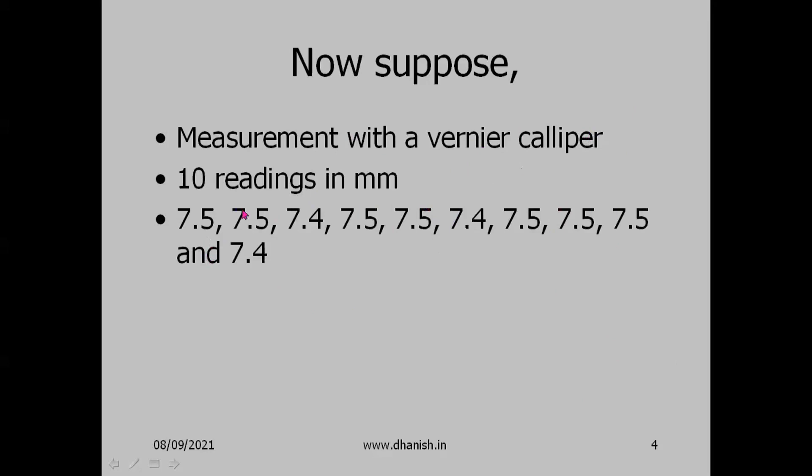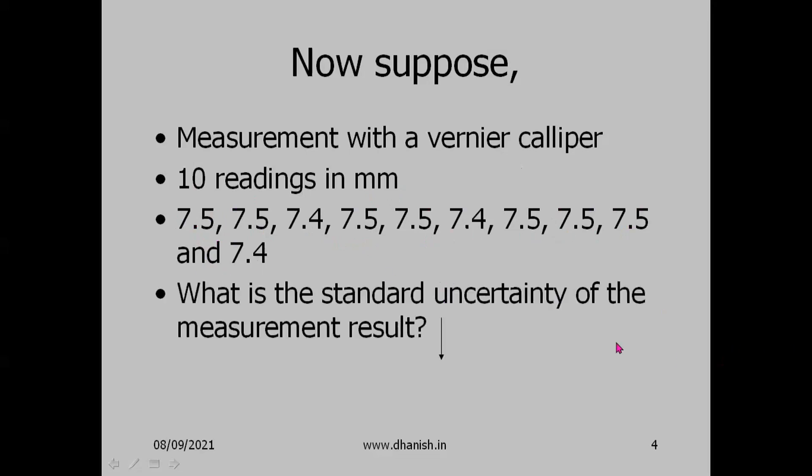Now suppose we had got the same readings by using a vernier caliper. These are imaginary readings - I just rounded off the previous readings to a single decimal place: 7.5, 7.5, 7.4, 7.5, 7.5, 7.4, 7.5, 7.5, 7.5, and 7.4. What is the standard uncertainty?